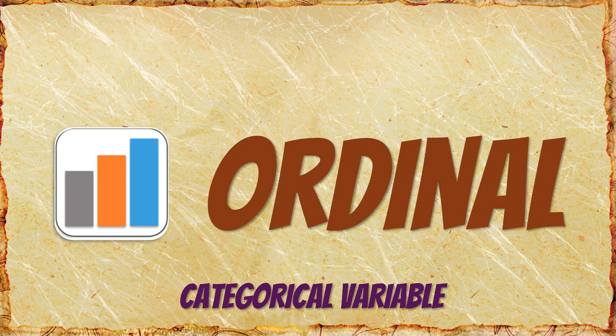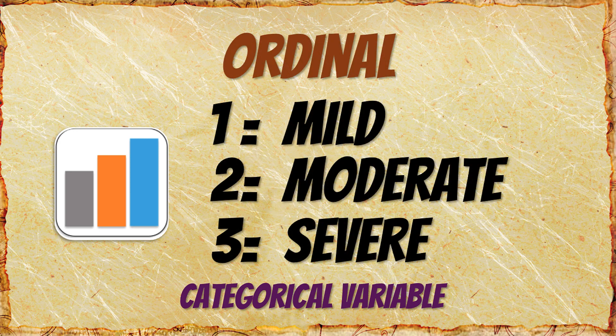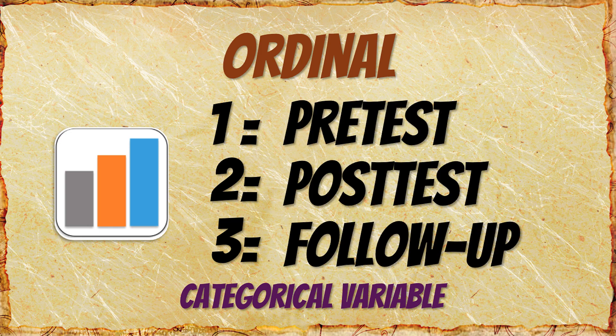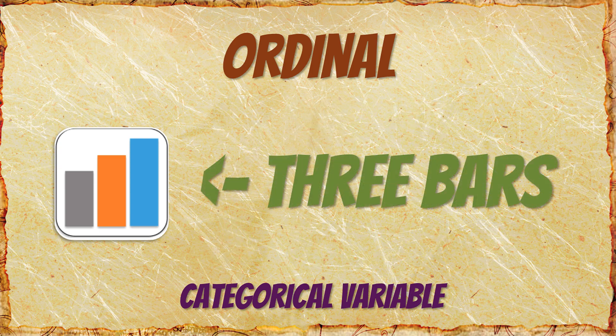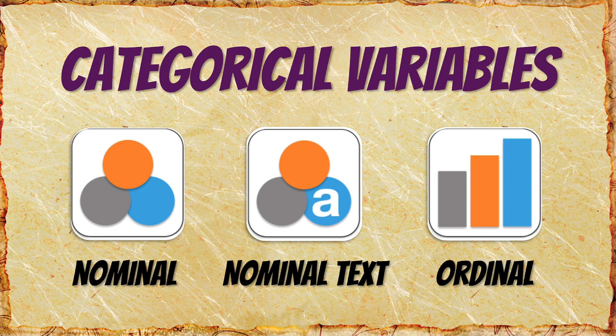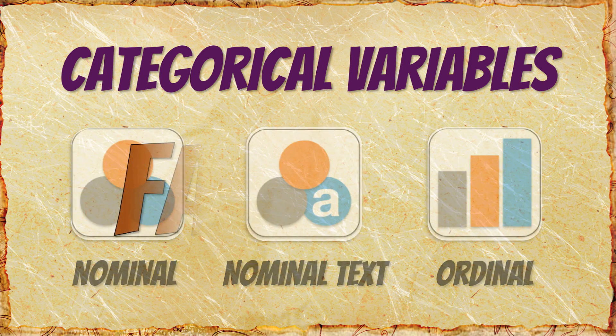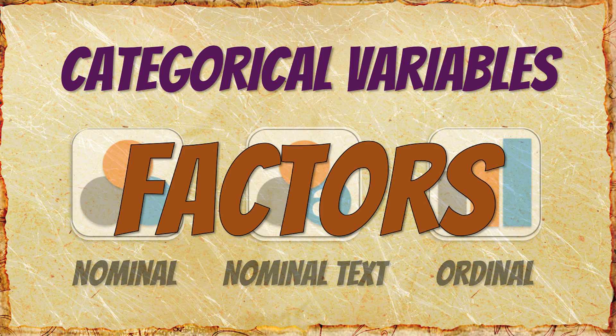Ordinal variables are the third type of categorical variable. They have some underlying order to them, such as diabetes that is mild, moderate, or severe, or a time variable with pretest, posttest, and three-month follow-up. Ordinal variables are recognized by their three bars. JASP will treat all three types of categorical variables as a factor. Factors are groupings that are often used as independent variables, such as in a t-test or a factorial ANOVA.